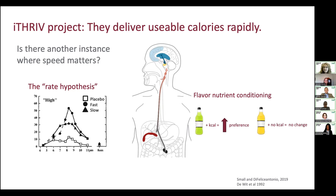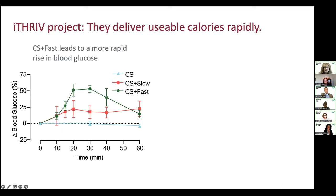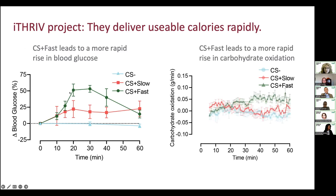Our question was essentially: is the same true for food? Are flavors paired with more rapidly absorbed calories more liked, more wanted, more attractive than flavors paired with slower calories? We used flavor-nutrient conditioning, where you take a flavor and pair it with a caloric consequence. Instead of calories versus no calories, we manipulated the speed at which calories are delivered. We used a long-chain carbohydrate maltodextrin for slow calories and sucrose for fast calories, which gives a fast rise in blood glucose and fast increase in carbohydrate oxidation.